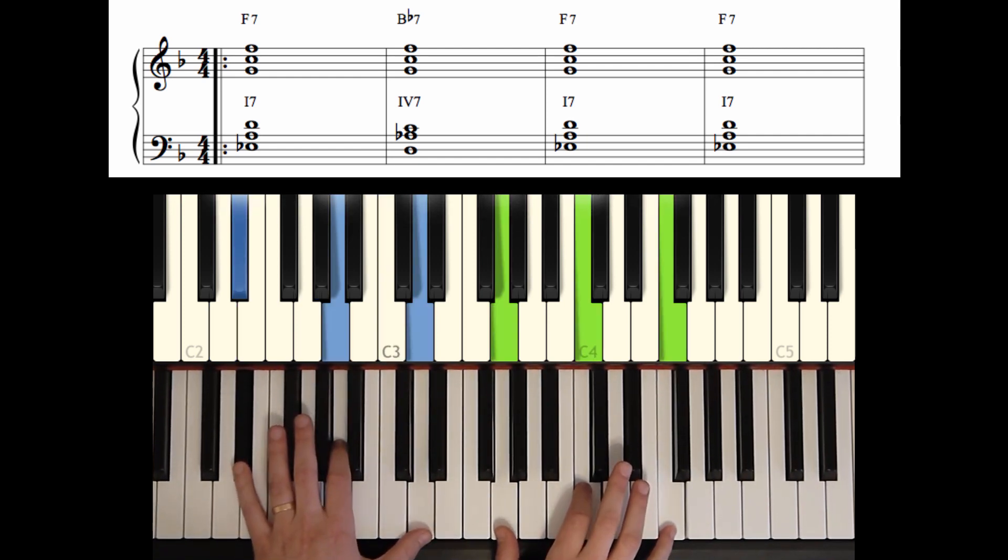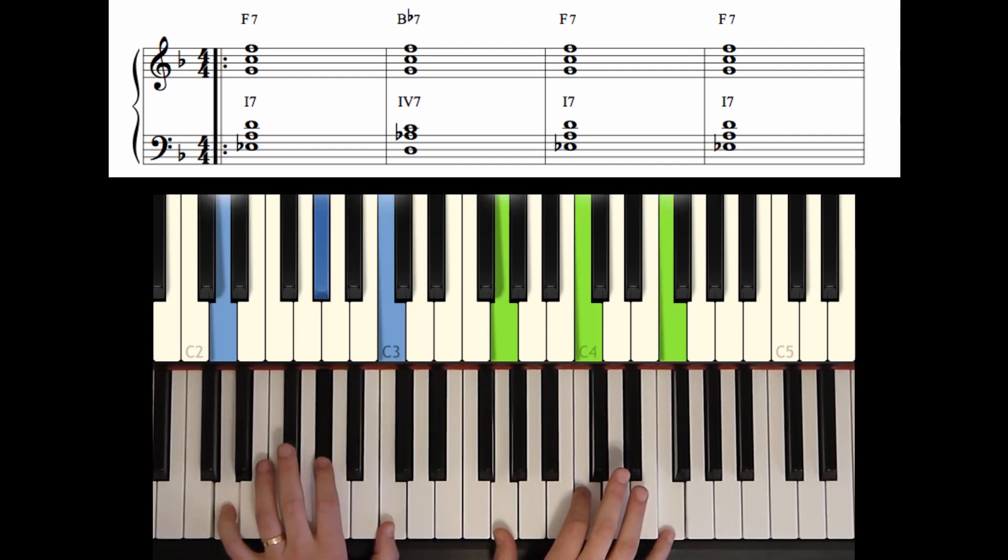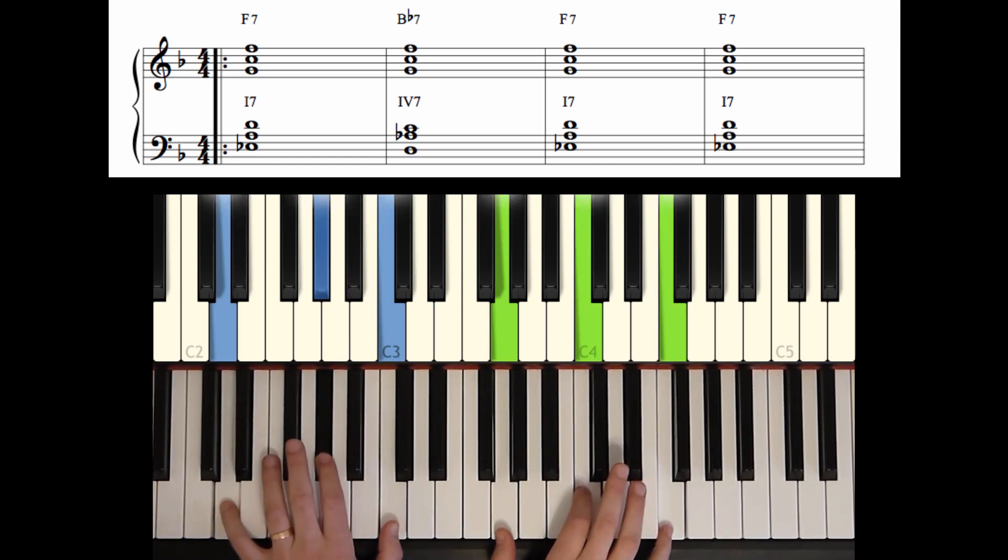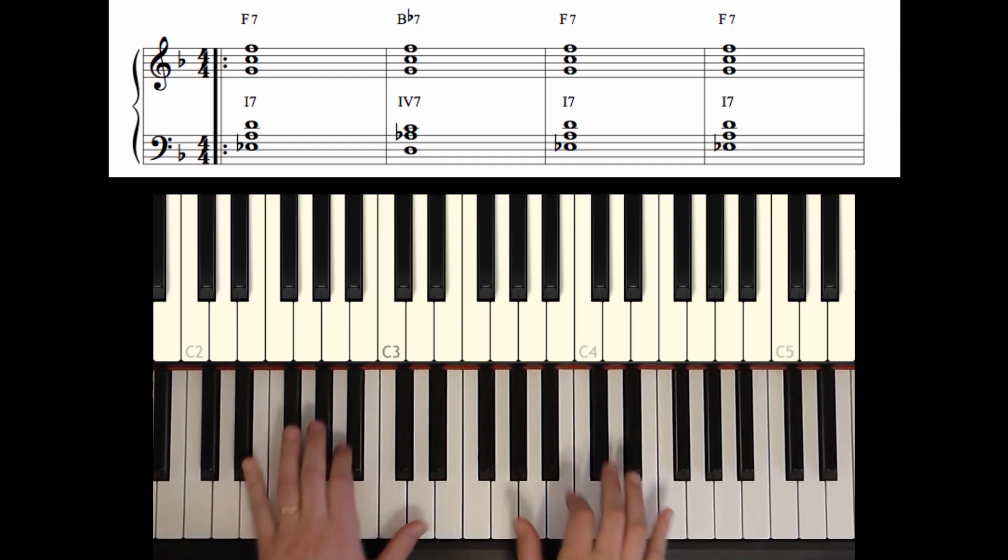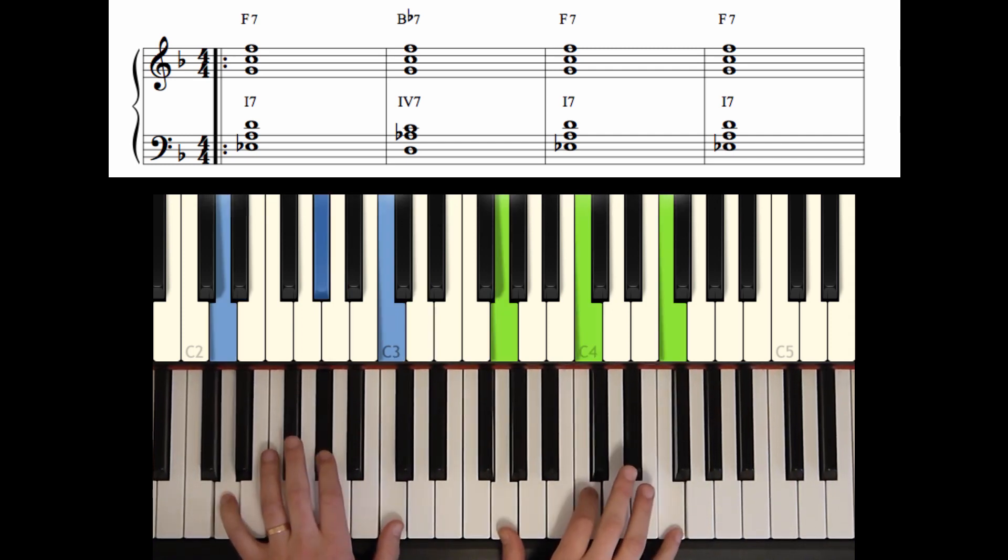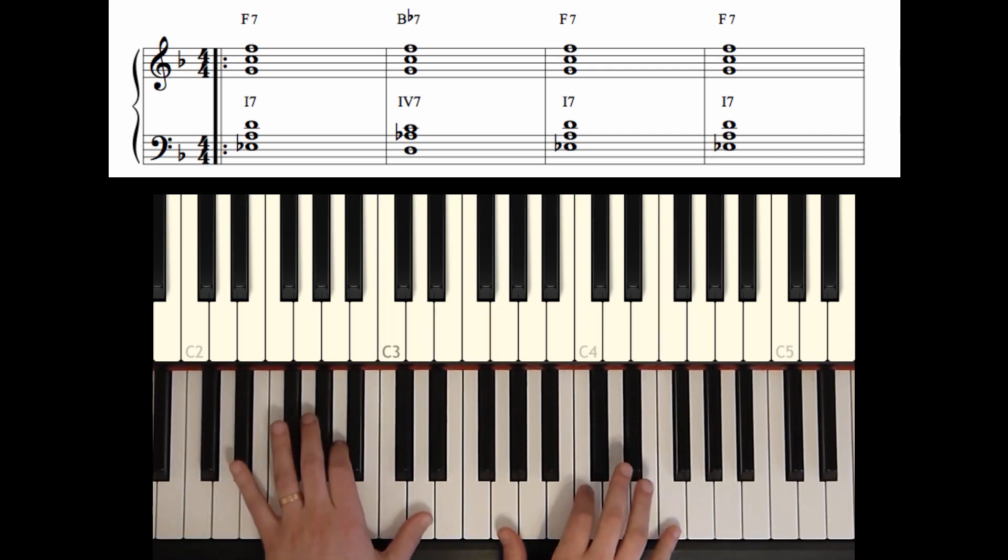So we have F7 to B flat 7. Or 1 to 4. So that covers the first two measures, and measures 3 and 4, easy enough, are F7 and F7 again. So let's play those four measures in whole notes. 1, 2, 3, 4, 3, 4, B flat 7, F7.